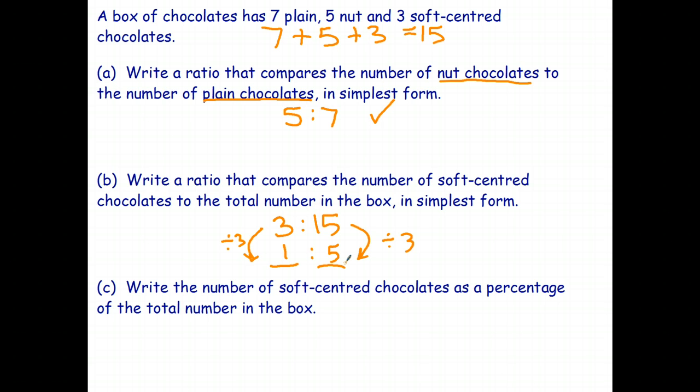So, in simplest form, the ratio of soft-centered to total number is one is to five.